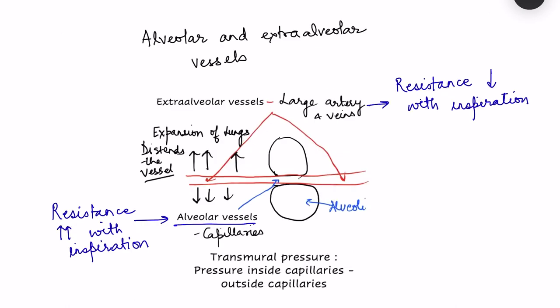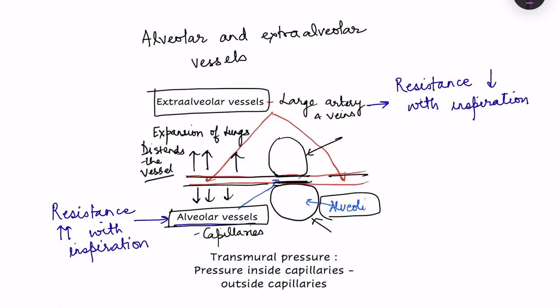Based on this, we have the concept of alveolar and extraalveolar vessels. In a schematic diagram, the circles represent alveoli, and the blood vessels running between the alveoli are the alveolar vessels, while the surrounding vessels are extraalveolar vessels. The extraalveolar vessels are the large arteries and veins, while the alveolar vessels are the capillaries running between the alveoli.